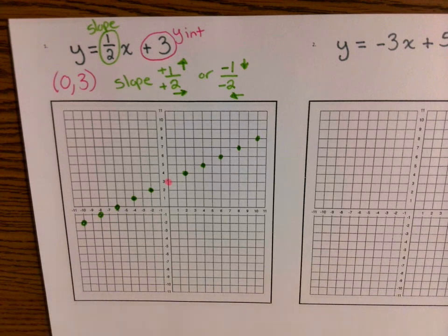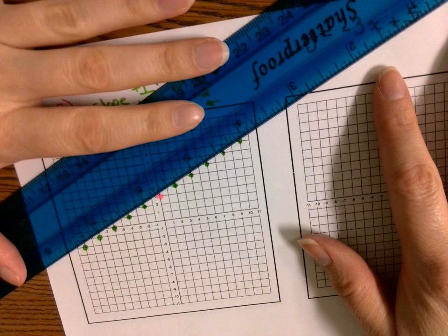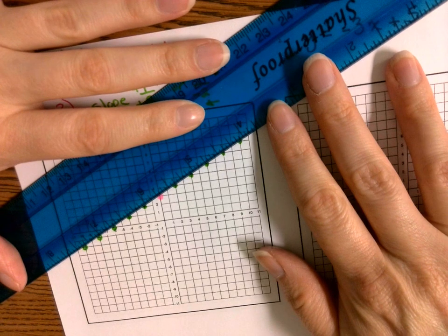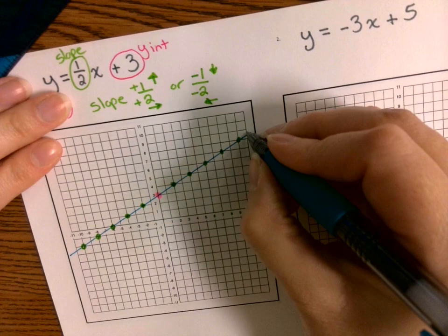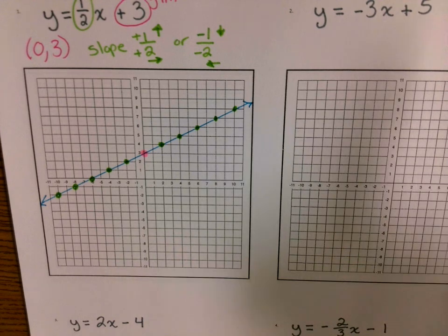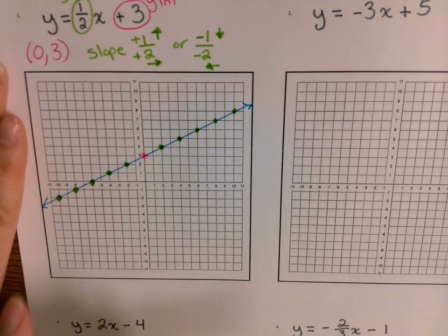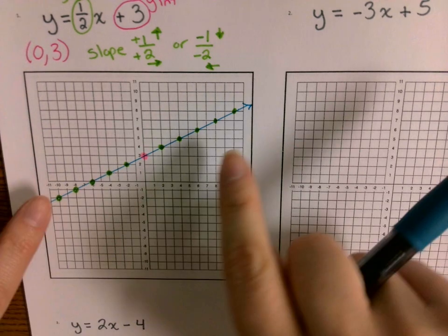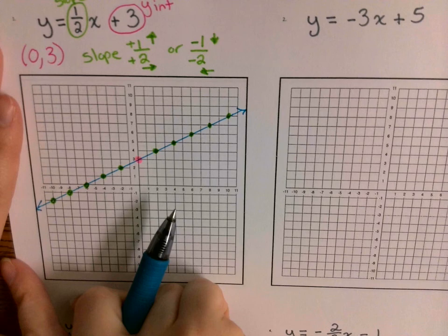Now when I want to connect them, I have to have a straight edge — a ruler — to connect. Make sure it goes through those points perfectly before you connect them. There's my line. You don't have to plot every single point; you could just plot one point off to the right side of the y-axis and one to the left, use opposite directions for the slope, then connect them. But for today, I want you to plot as far as you can in both directions.